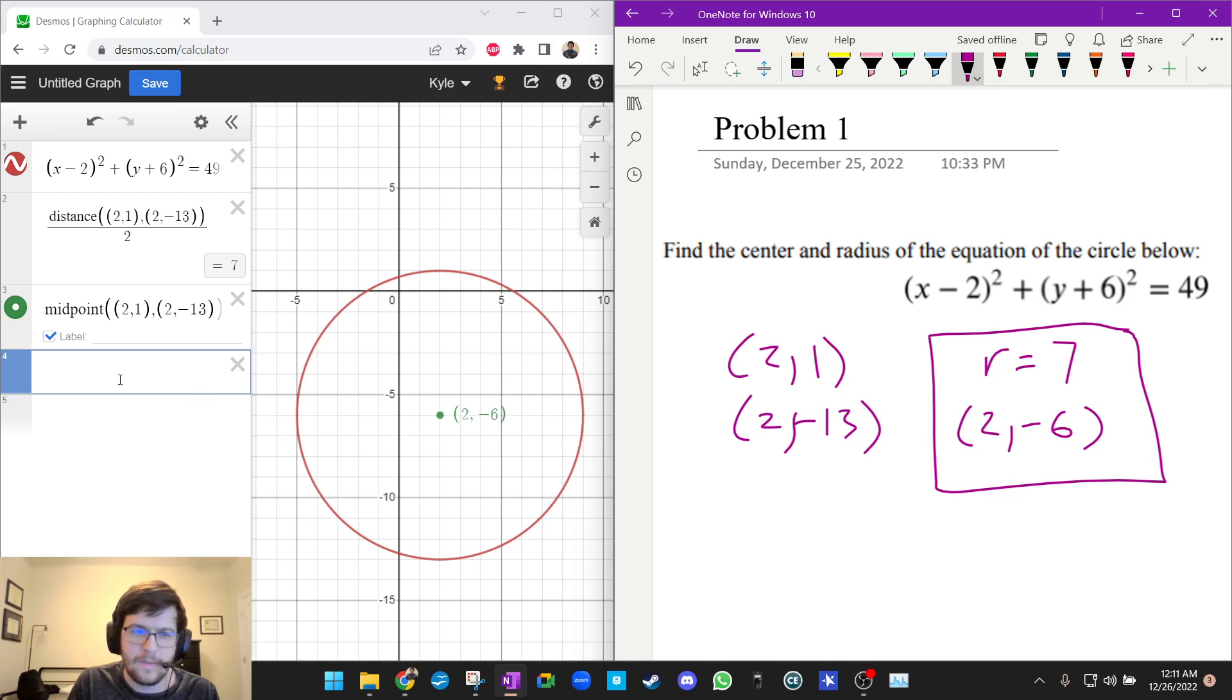Another question that you could answer is sometimes they ask these questions where which of the following points lies on the circle. So if you wanted to you could type in the point and see if it lies on the circle. So for example let's say I want to see if 9 negative 6 is on the circle. I'm going to type it in and I see it is. Let's try another one. Let's say I did 8 comma 4. I see that does not lie on the circle so maybe that would not be my answer.